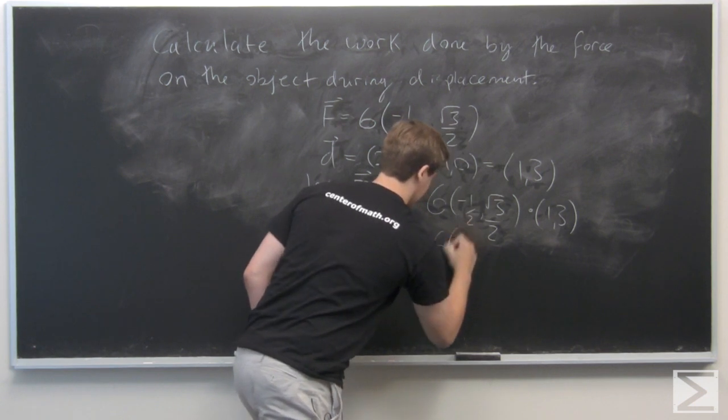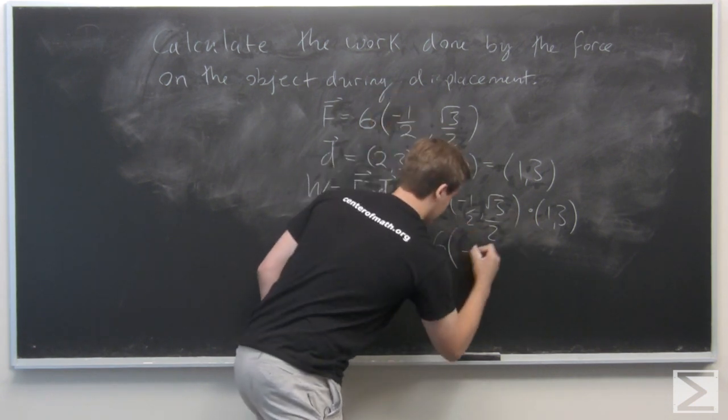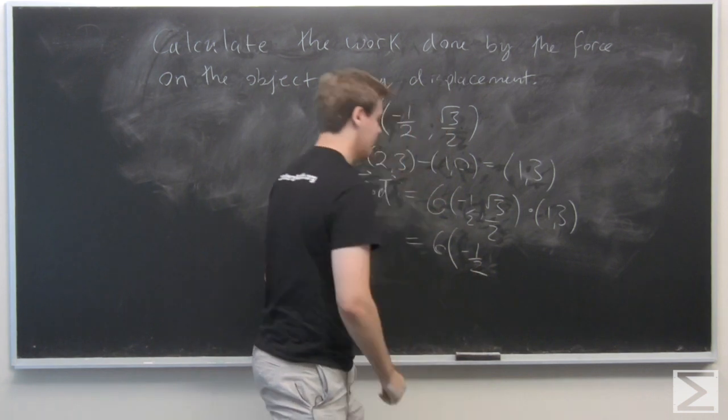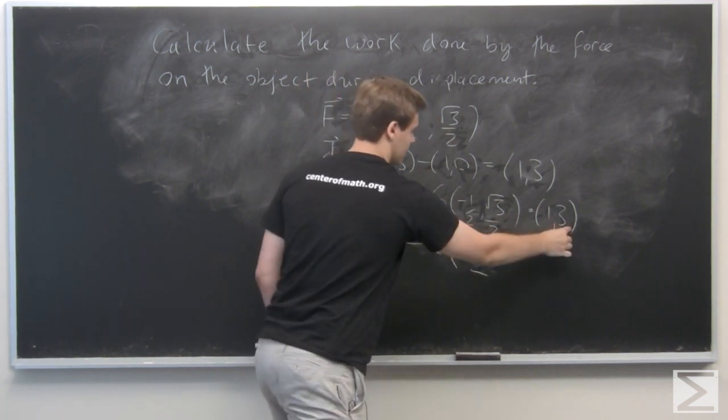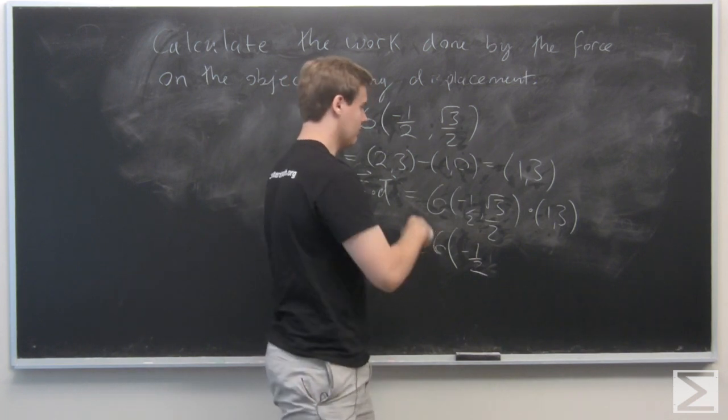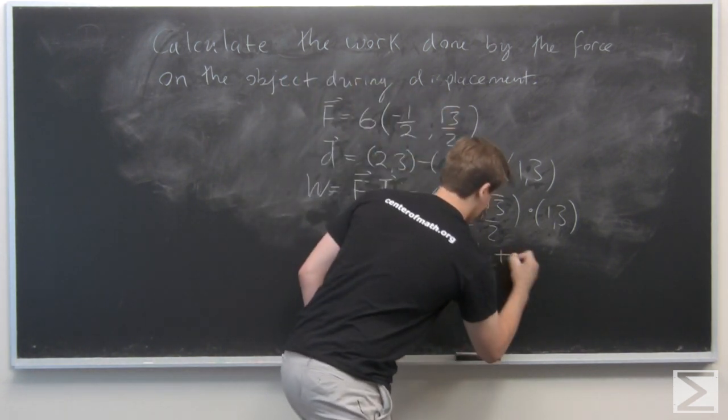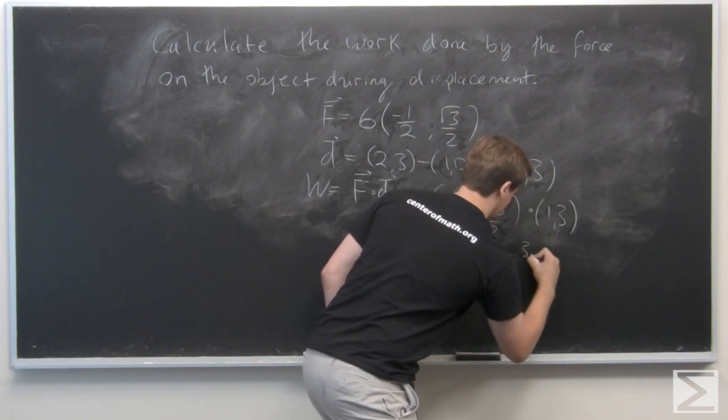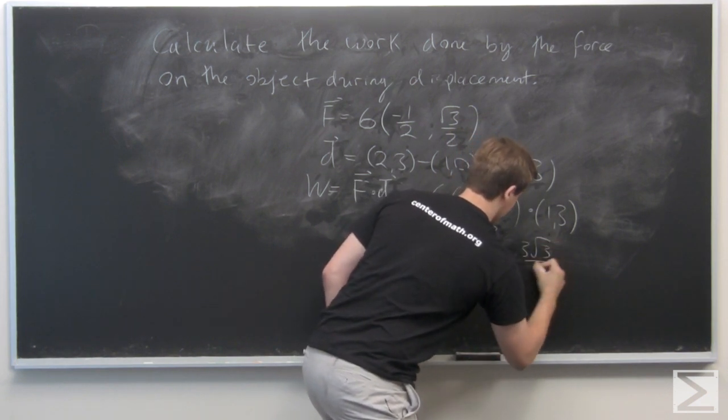This is just going to be 6 times negative 1 half, and then we add root 3 over 2 times 3, which is going to be 3 root 3 over 2.